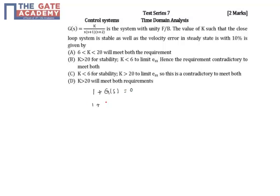So 1 plus K by s into (s plus 1) into (s plus 2) equal to 0. This implies s into (s plus 1) into (s plus 2) plus K equal to 0. Expanding this gives s into (s squared plus 3s plus 2) plus K equal to 0.